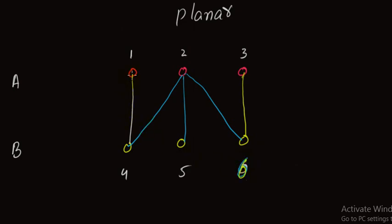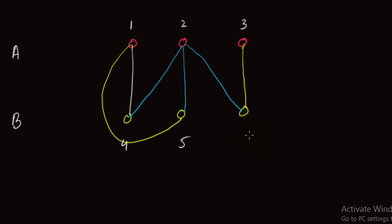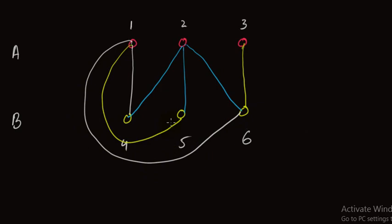Now we try to connect vertex 1 with the remaining vertices of set B. Vertex 1 is already connected to 4. We can connect vertex 1 and vertex 5 by choosing a suitable path. Similarly, I can connect vertex 1 and vertex 6. Now vertices 1 and 2 of set A are connected to all the vertices of set B.